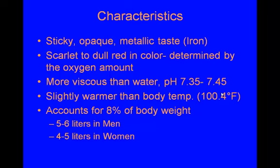Some characteristics of blood: it is sticky, opaque, and has a metallic taste due to the iron found in blood. It's scarlet to dull red in color — the brighter the red, the more oxygen it has; the duller the color, the less oxygen. Blood is more viscous or thick than water, with a pH of 7.35 to 7.45. Blood is also slightly warmer than body temperature at about 100.4°F, based on a 98.6° body temperature. Blood accounts for 8% of your body weight — 5 to 6 liters in men, 4 to 5 liters in women.